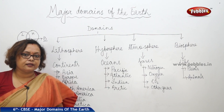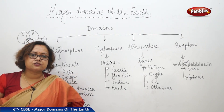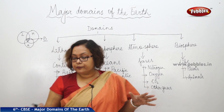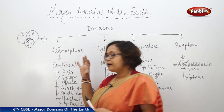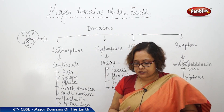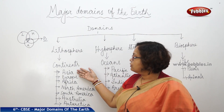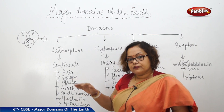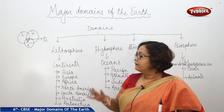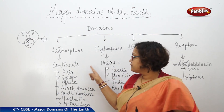The first continent is Asia, which is the largest continent — the major part of the earth's land area. Our country India is also situated in Asia. The largest mountain ridge, the Himalayas, is also in Asia. The second continent, Europe, is the smallest continent.